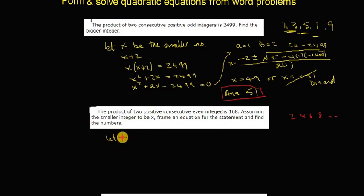So we're going to let x be the small number. That means x plus 2 is the big one because it's a consecutive even number. And we know that x by x plus 2, the product of them, is equal to 168. That's going to give me x squared plus 2x is equal to 168.